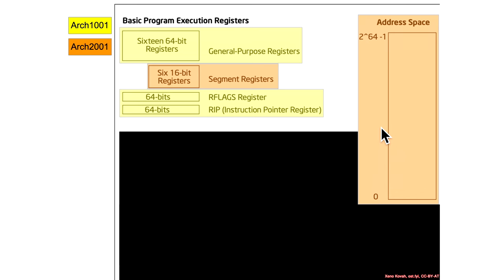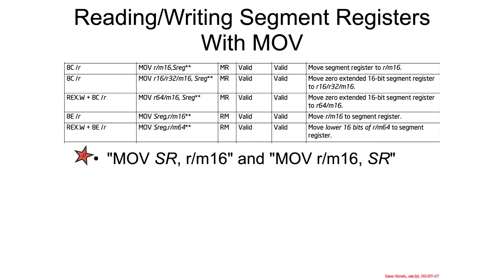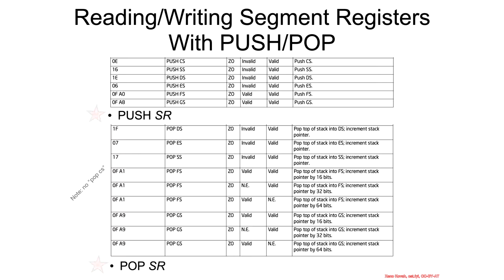How do you actually set these segment registers — CS, DS, SS, etc.? There are move instructions; they appear under the normal MOV instruction in the manual. Among the many forms of MOV are instructions moving from an RM16 to a segment register and from a segment register to an RM16. There are also PUSH and POP versions where you can push and pop the various segment registers. Note that there is no POP CS instruction.